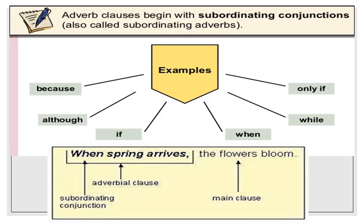Usually adverbial clauses are initiated by subordinating conjunctions. It's very essential to have subordinating conjunctions because they tell us the meaning of the clause you are writing. Some examples of subordinating conjunctions are: because, although, if, when, while, and only if. Each one of them has a different meaning according to the type of adverbial clause.